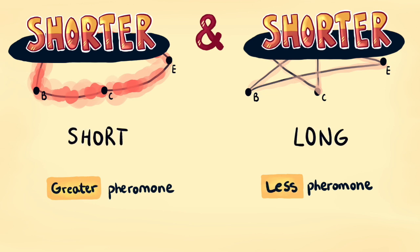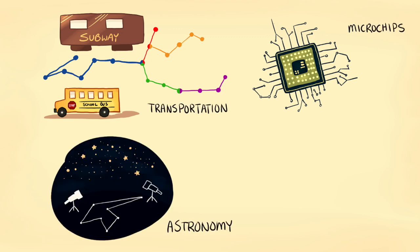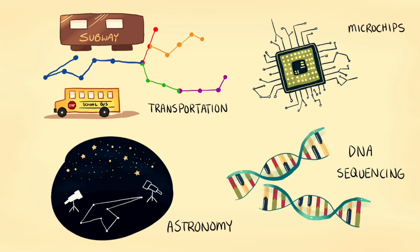With these short paths, TSP can approximate optimal transportation routes, build microchips, and also map telescope placement in astronomy. And if we think of distance as similarity between DNA fragments, we can even use TSP for DNA sequencing. Who knew?